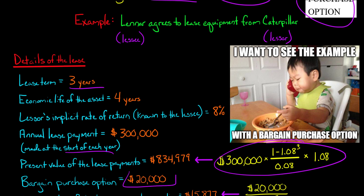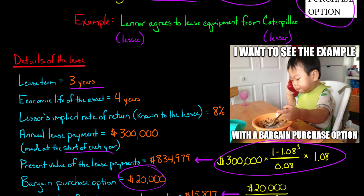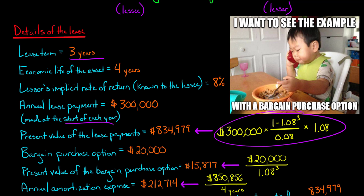We're going to treat this $20,000 as a final payment to the lessor — so basically the lessor is going to get $300,000 three times, and then at the very end of the lease they're going to get $20,000. This $20,000 is going to affect the initial lease liability; however, you don't just add it to the present value of the lease payments. Because this $20,000 is not going to be paid until the end of the lease — at the end of three years — we need to discount it to its present value. Using the formula for the present value of a single cash flow: $20,000 divided by (1 + 0.08) to the third power equals $15,877.